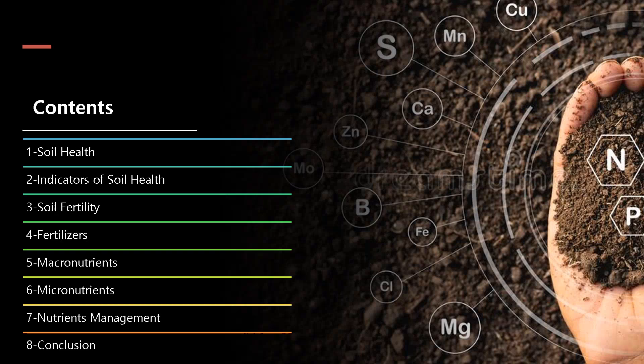After that, forms of macro and micronutrients will also be discussed which are readily available for uptake by plants. From the practical point of view, deficiency symptoms and the role of each macro and micronutrient in plants will be discussed. In the end, critical points regarding the management of soil fertility and nutrients management will be elaborated in detail with a conclusive conclusion.